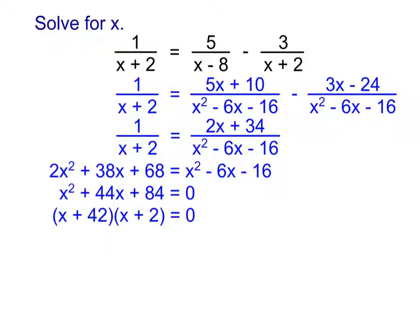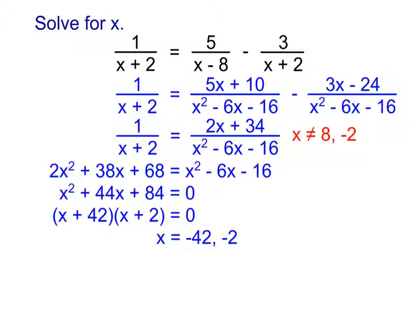Once you get that quadratic set equal to 0, do try factoring it first. You can always use the quadratic formula, but it's more prone to errors than factoring. This one actually is factorable. When we factor it, you end up getting (x + 42)(x + 2), which means our solutions are x equals negative 42 and negative 2. Kind of — one of those is right and one is wrong. Think restrictions: I can see that I had x minus 8 and x plus 2 in my denominator, so x cannot equal 8 or negative 2. But negative 2 was one of the solutions I found, so negative 2 is actually extraneous. The only actual solution is x equals negative 42.